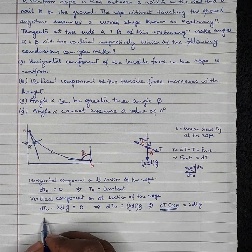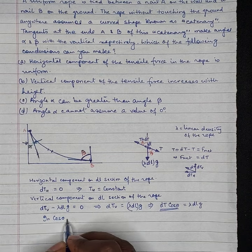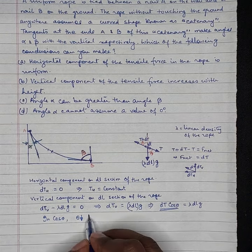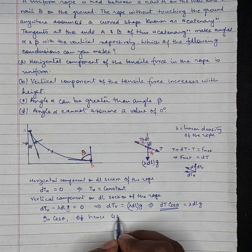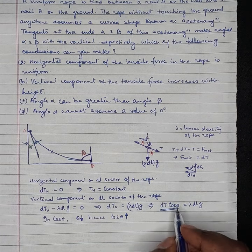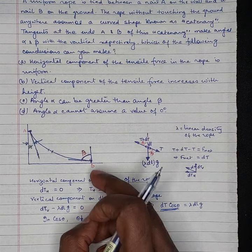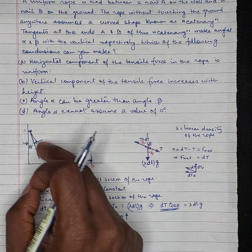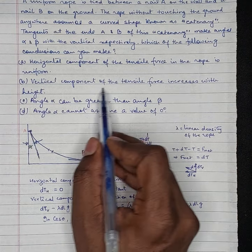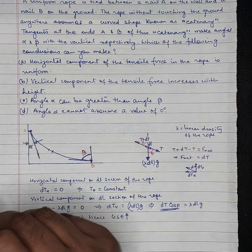So it means theta is decreasing. So in cos theta, theta is decreasing. Hence cos theta will increase, will keep increasing. So therefore, vertical component will be increasing throughout when we go from B to A. So vertical component of the tensile force increases with height. So this also is correct.